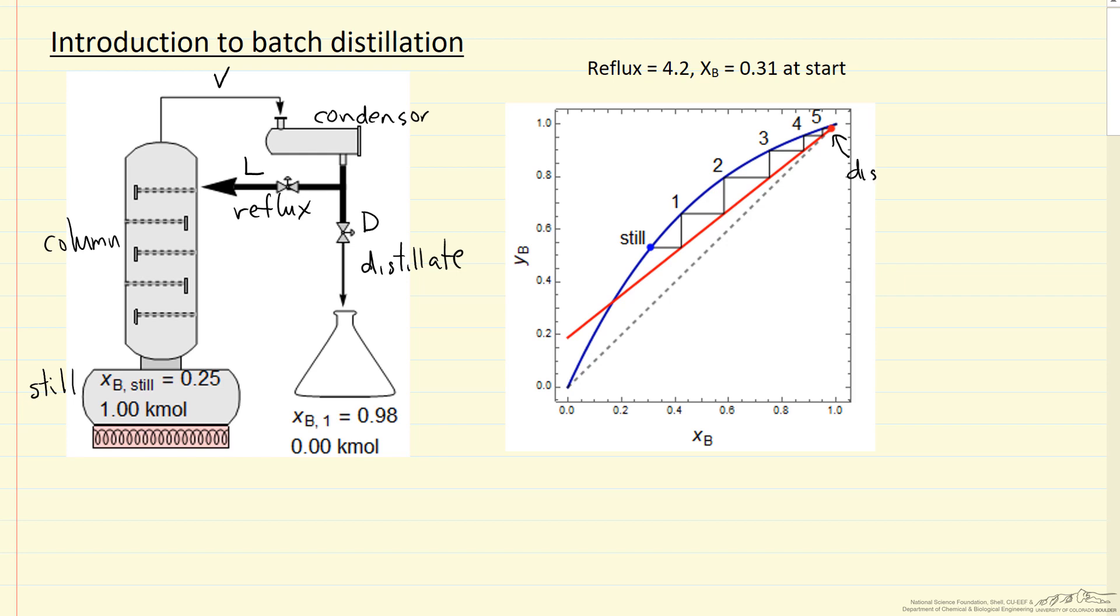This is the distillate and you can see the still mole fraction here, and this is slightly different conditions. This is starting with a mole fraction of 0.31, a reflux ratio of 4.2.